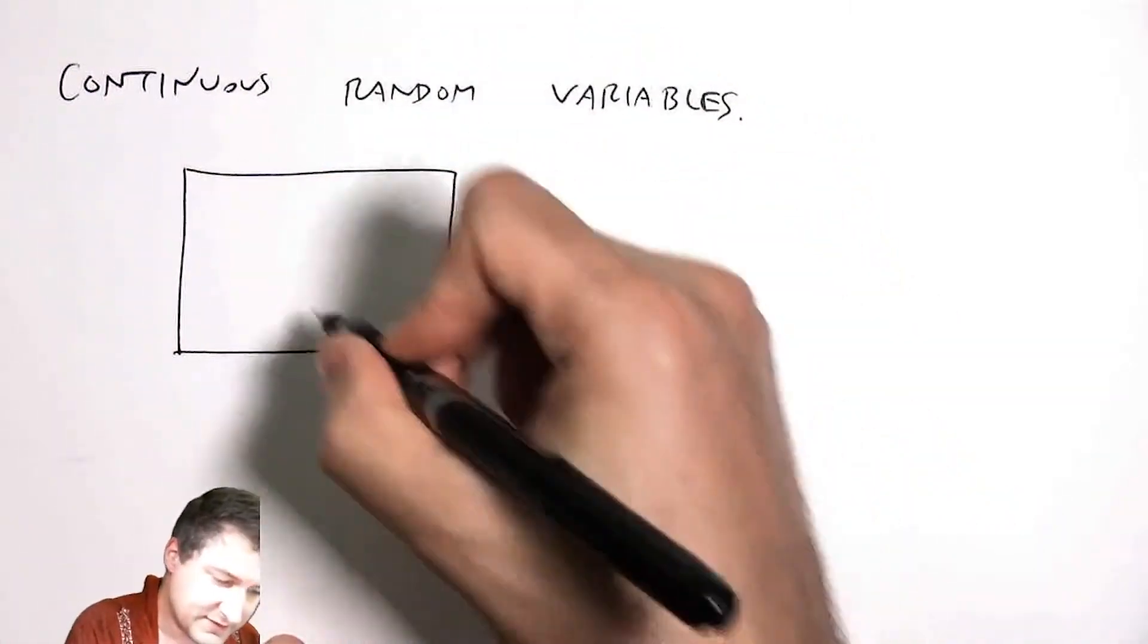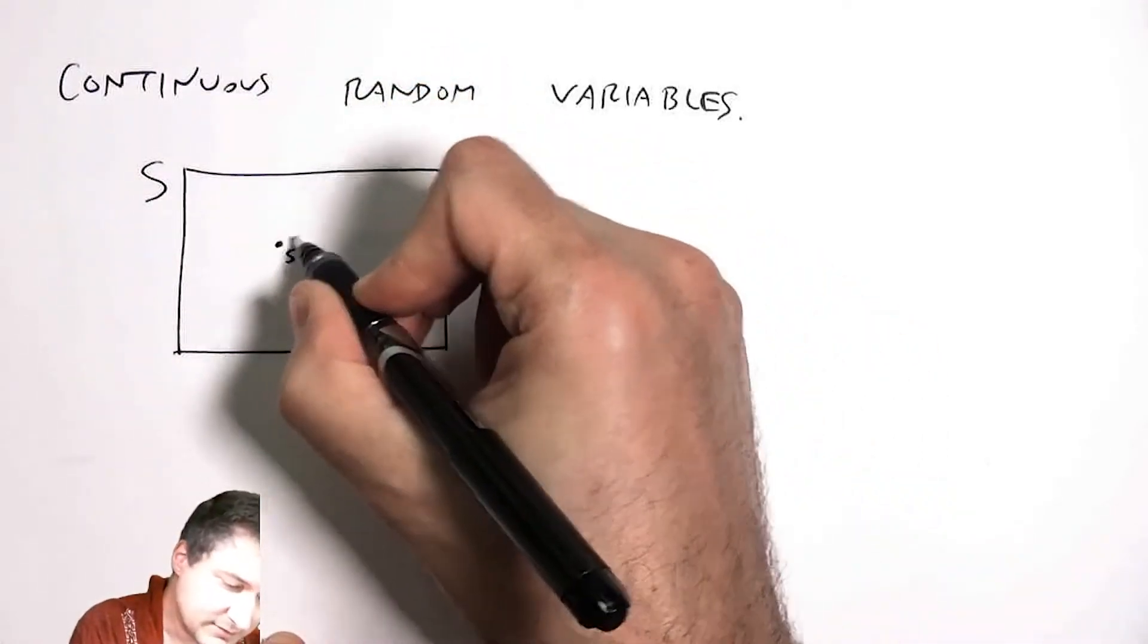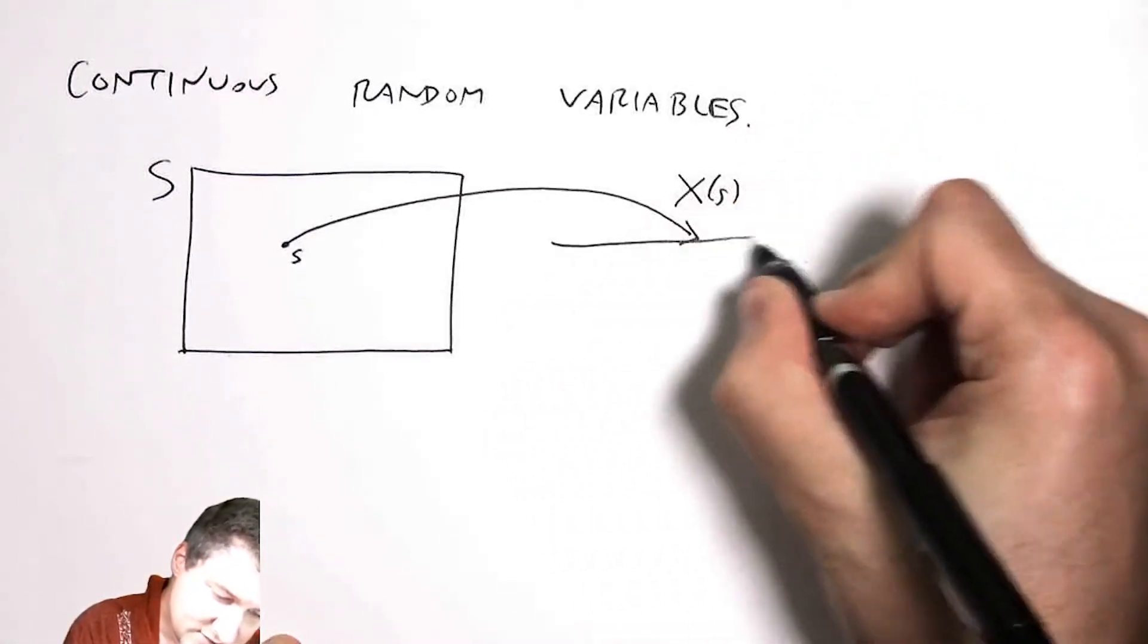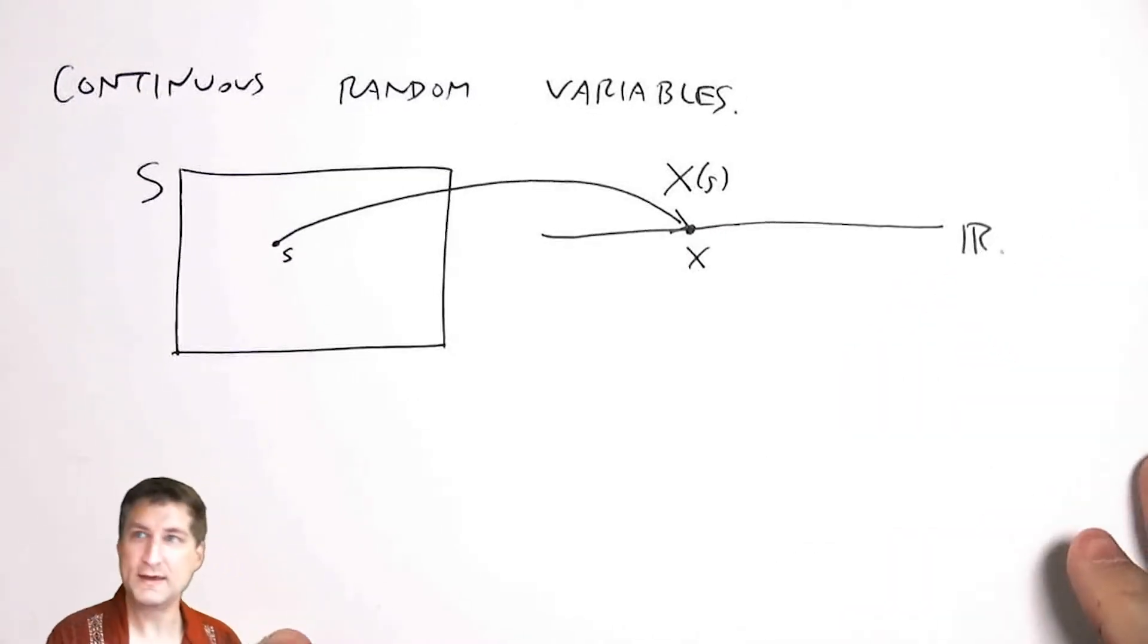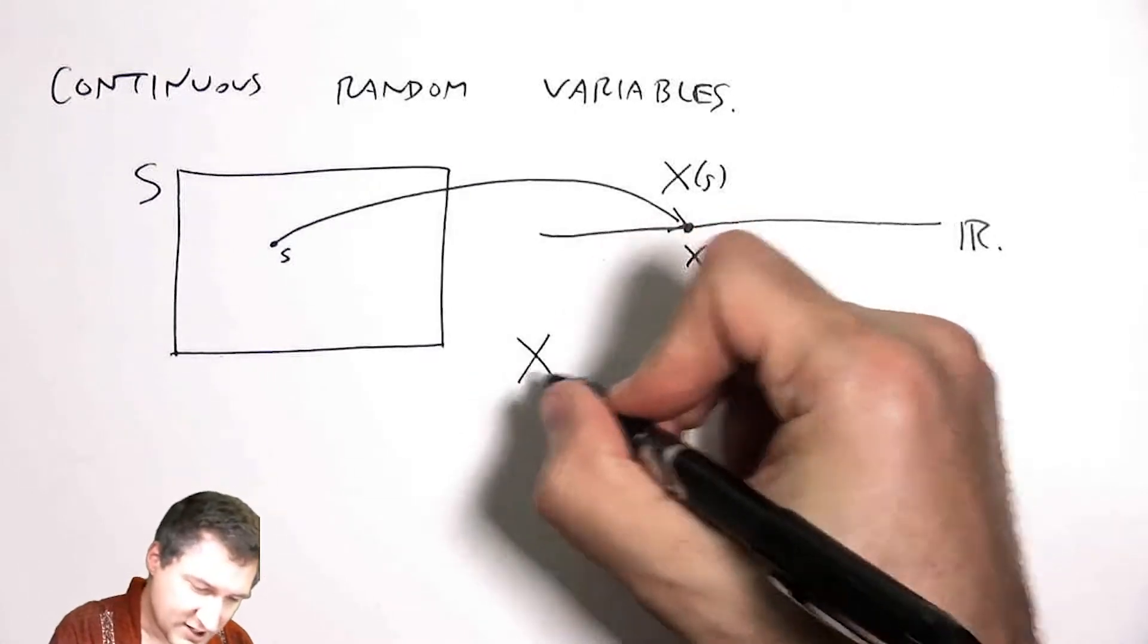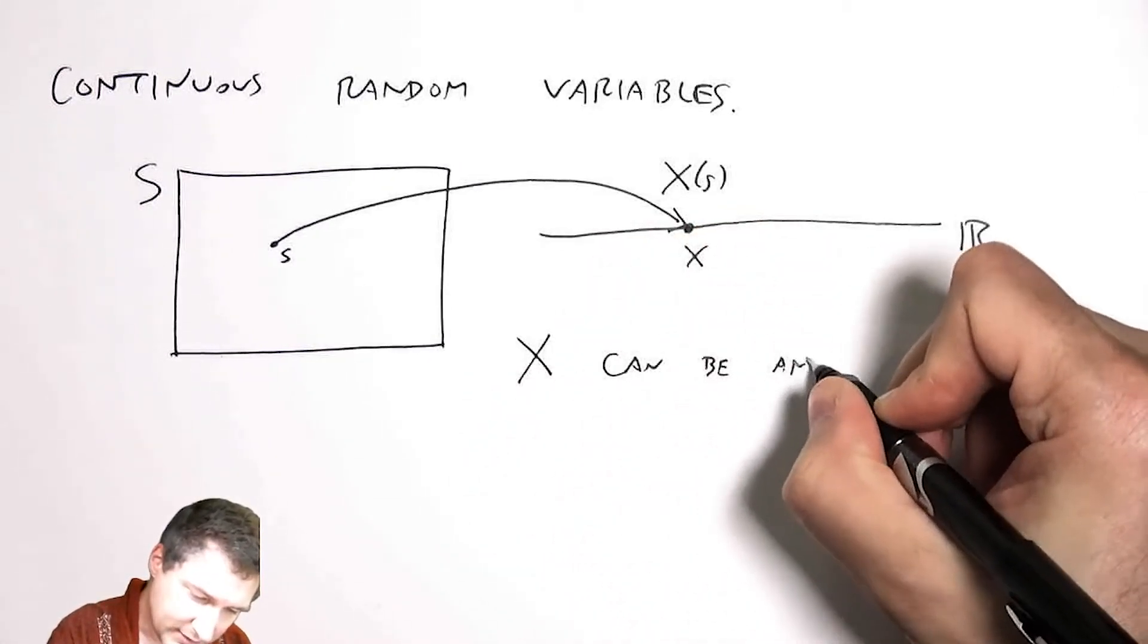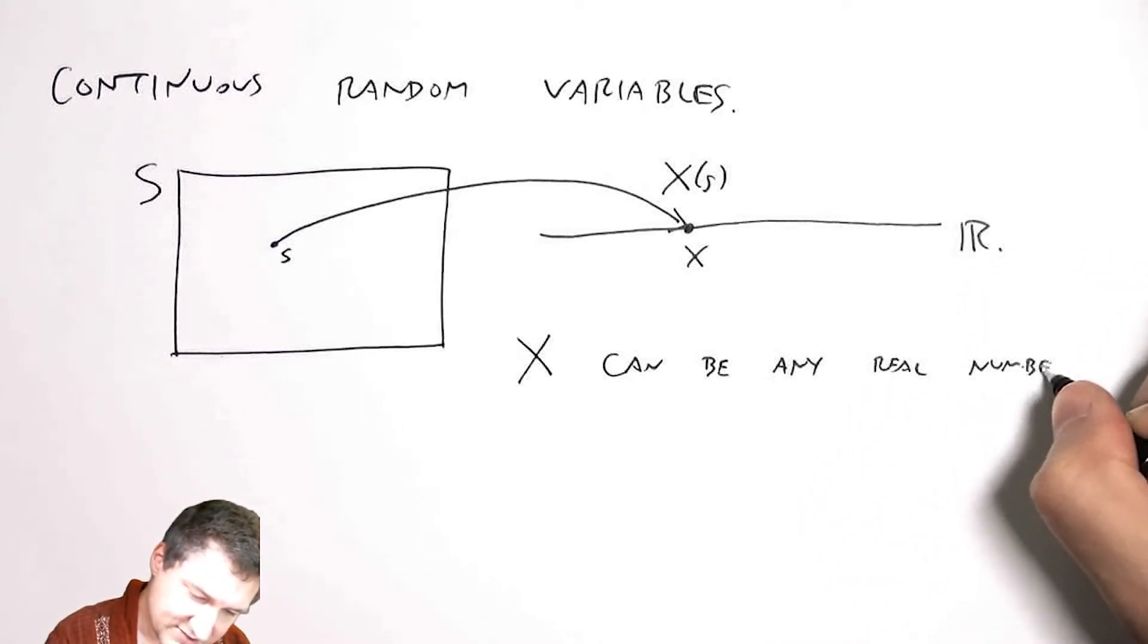So remember the setup for random variables: I have some sample space, I do an experiment, I get an outcome, and I map that outcome via this random variable x to some real number. And so we like to talk about real numbers in engineering. Here x can be any real number, not just some discrete real number or a real number from some discrete set.